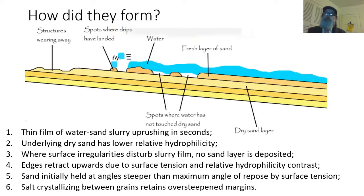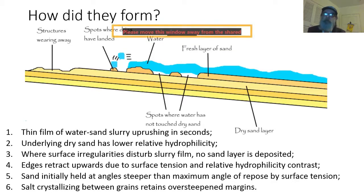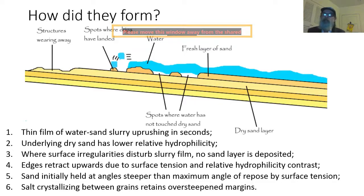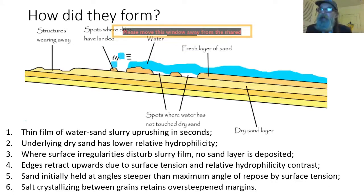Once the swash wave has reached its maximum point, the edges of some of these structures retract upwards due to surface tension, capillary action, and the hydrophilicity difference between the dry sand and the wet sand. The sand can initially be held at an angle steeper than the maximum angle of repose by surface tension. And then, as it dries out, salt crystallizes between the sand grains, which retains the oversteepened margin of some of these structures.